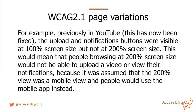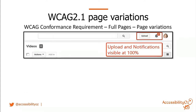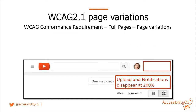Previously in YouTube — they have since fixed this — the upload and notifications button was available at 100% screen size on desktop. But if you increased to 200%, they would disappear, because it was assumed you'd be on a mobile device and would use the YouTube mobile app. This meant people with low vision who needed larger text couldn't upload videos on desktop. The upload and notifications buttons disappear at 200% zoom.